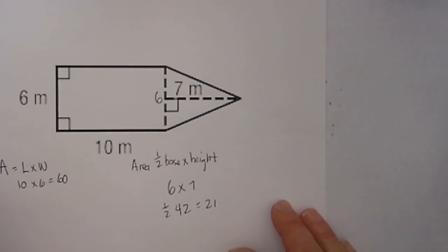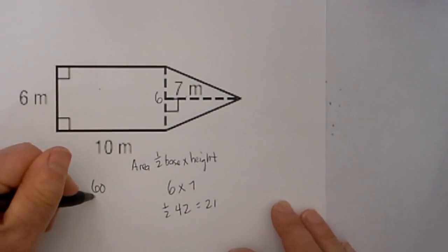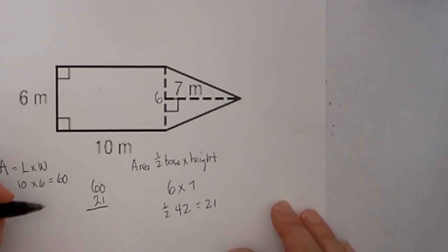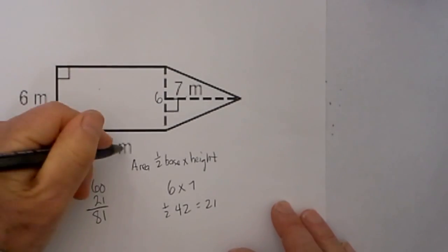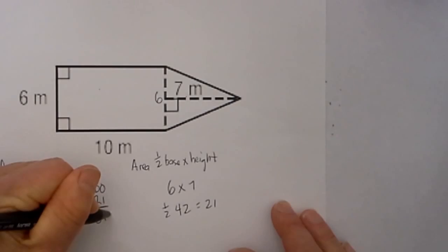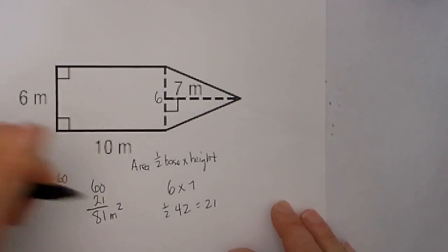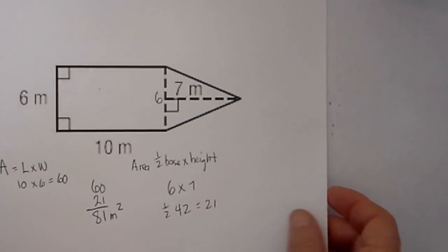So now we will combine those two numbers. So we have the area of the rectangle which was 60 and the area of the triangle is 21. So that gives you a grand total of 81. And remember your units of measure, which is meters squared. So there is number one.